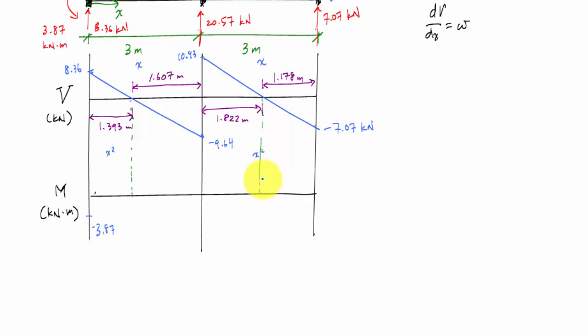Now I've got to calculate some areas. And this area right here, which is the area of a triangle, one half base of 1.393 meters times the height of 8.36, this is 5.823 kilonewton meters. And that means I'm going to start from here and increase 5.823, which will take me to 1.953. So this is 1.953 kilonewton meters, and my graph looks something like that. Hey, that's pretty good.